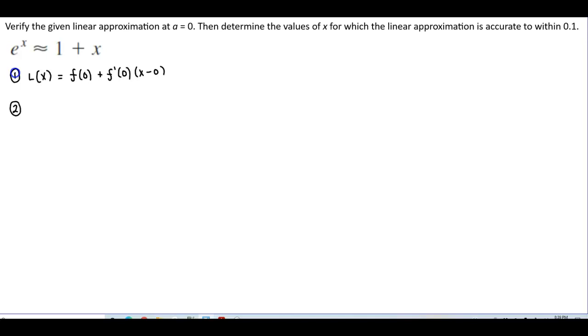And so we know that the function we're dealing with, f of x, is equal to e to the x. And so what would the derivative of that be? Well, the derivative is going to be e to the x times the derivative of x, which is 1. So this is e to the x.